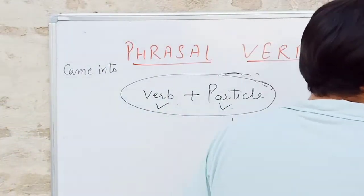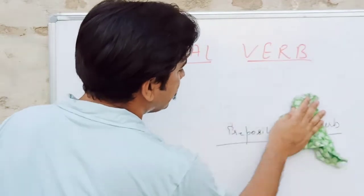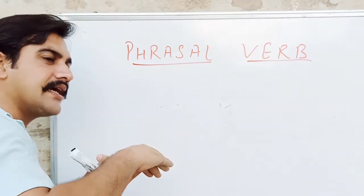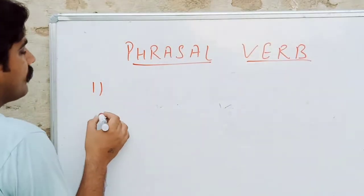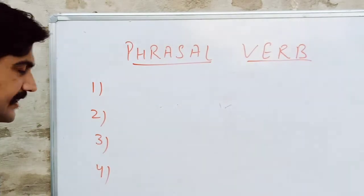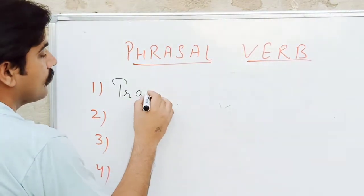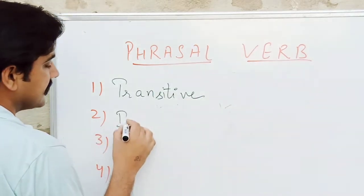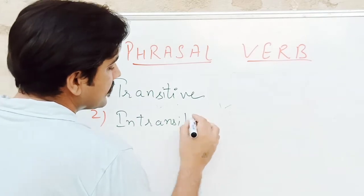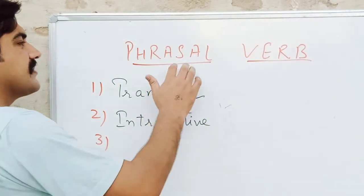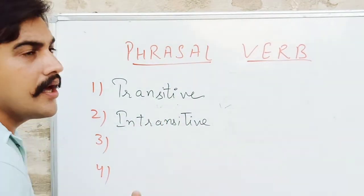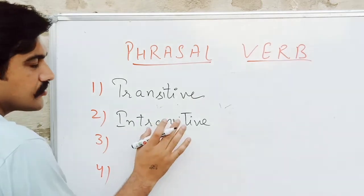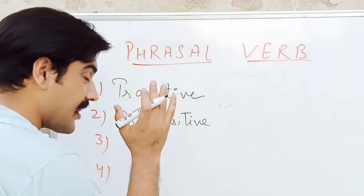Now, what are the different categories of phrasal verbs? There are four categories — actually two main categories, each divided into two further subcategories. The first two main categories are similar to how action verbs are categorized: transitive and intransitive. The same way, phrasal verbs can also be transitive or intransitive, and based on that they have further subcategories.